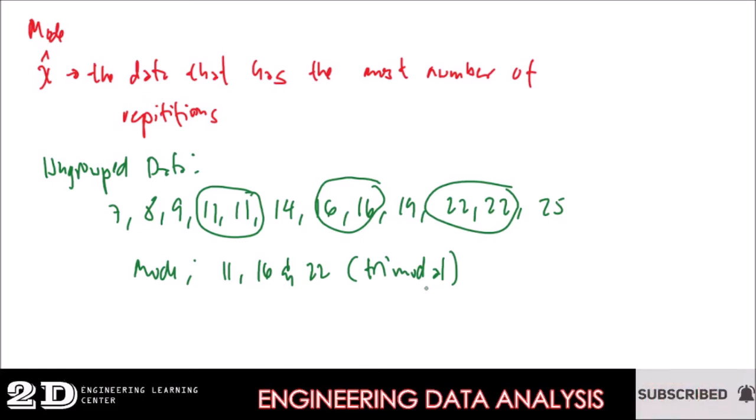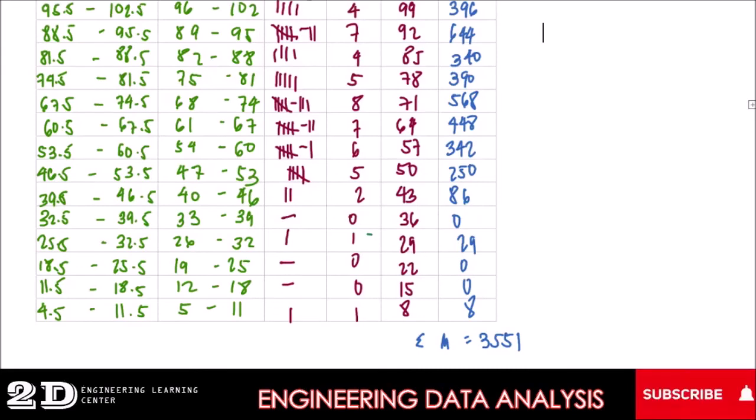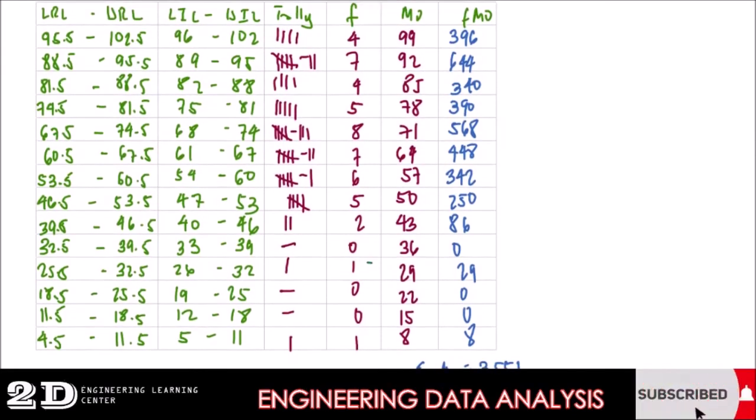Okay, so that is applicable in grouped or ungrouped data. Now, in grouped data, we will go to our table which we did last time. Okay, so the same tables, we have the same data. So in order for us to get the mode, we just look at the column for frequency. The class that has the highest number of frequency, this one, this is 8, so that class is our mode class.